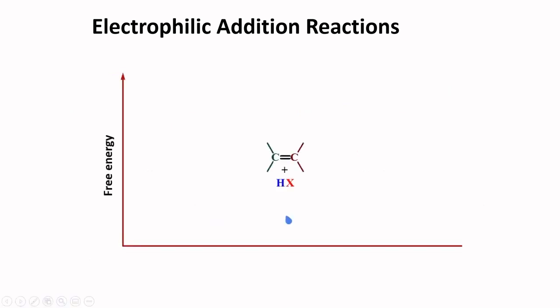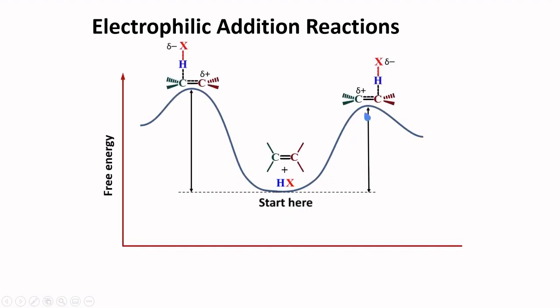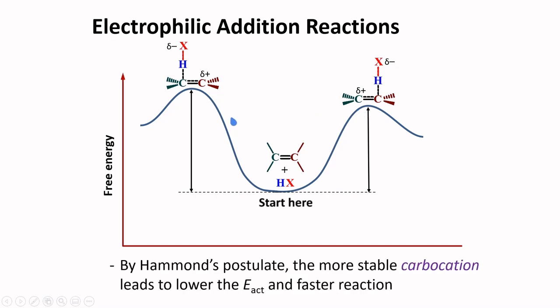For the two possible products, there may be two different routes. One route may have lower energy of activation, another can have higher energy of activation. By Hammond's postulate, the more stable carbocation leads to lower energy of activation and a faster reaction. If a reaction were to occur, there is a higher chance for this route to be taken because it has lower energy of activation. Hence, the carbocation formed here must have lower energy.